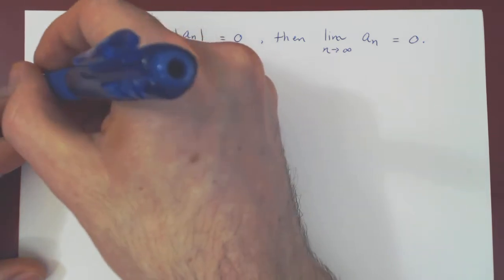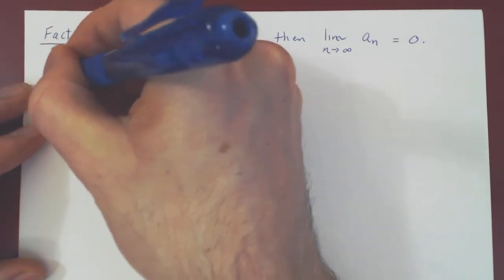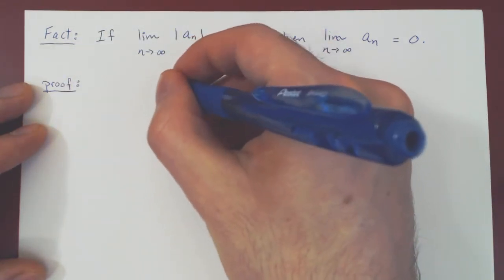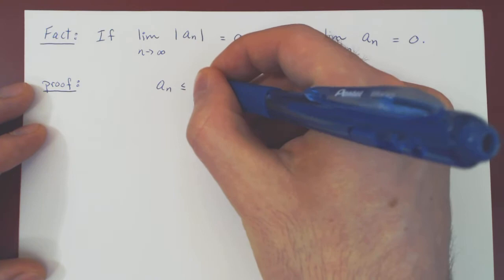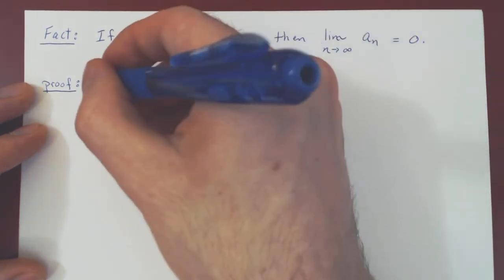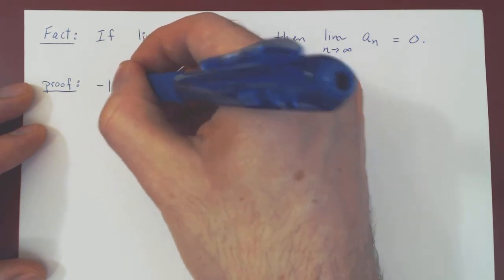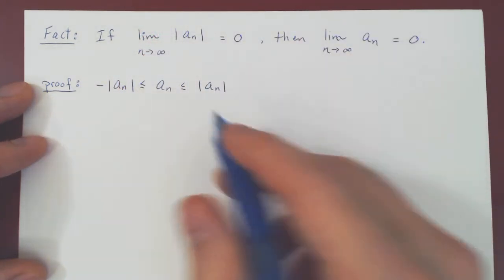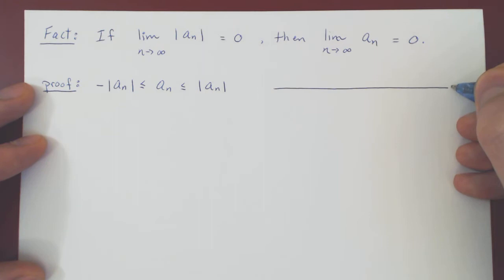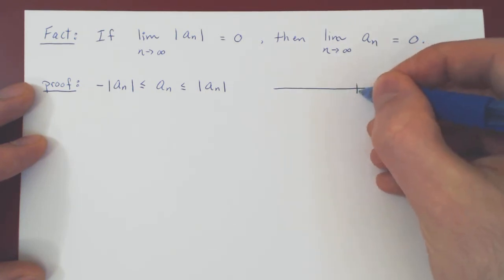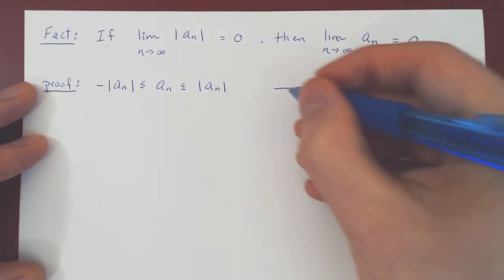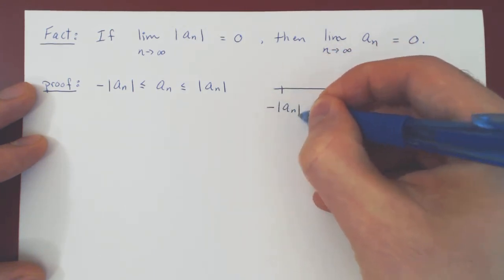Well, let's give a very short proof of this intuitive understanding using the squeeze theorem. We know that any real number is at most its absolute value and at least as big as the negative of its absolute value. So if you visualize this on the real line, then you have 0, you have the absolute value of a_n and you have the negative of the absolute value of a_n.